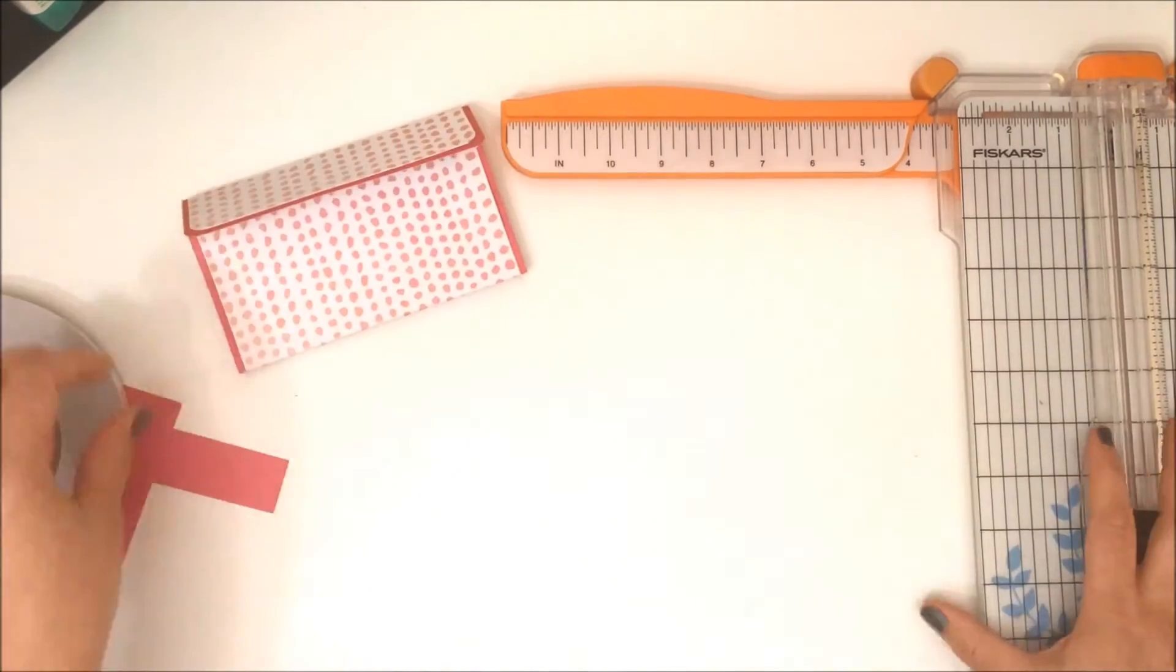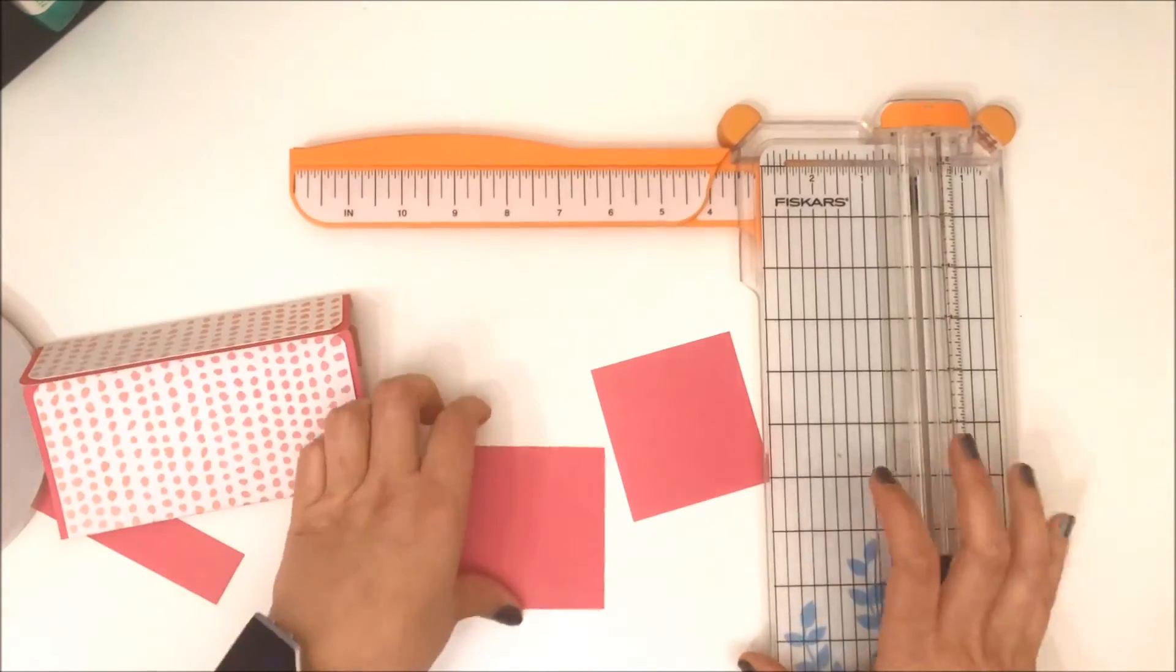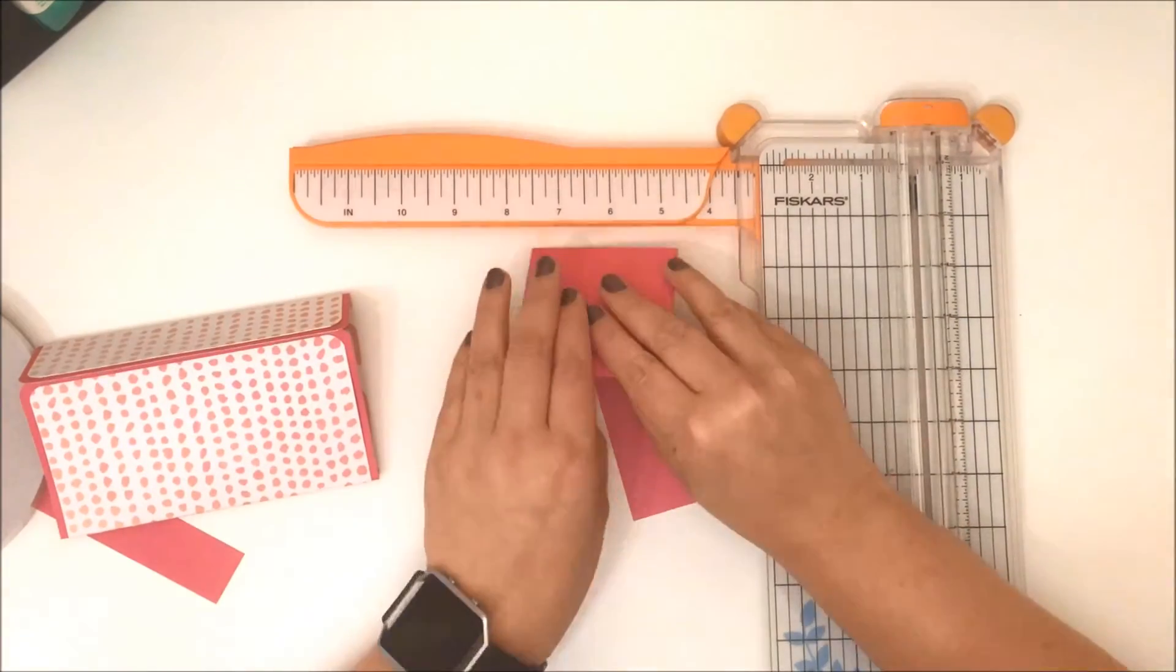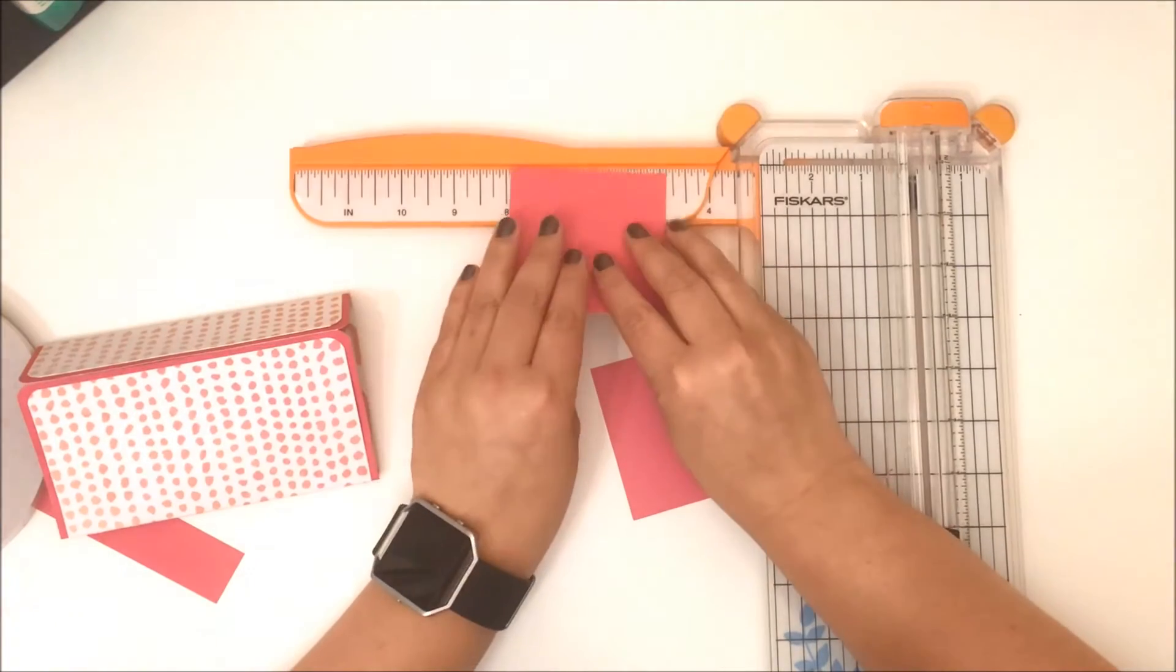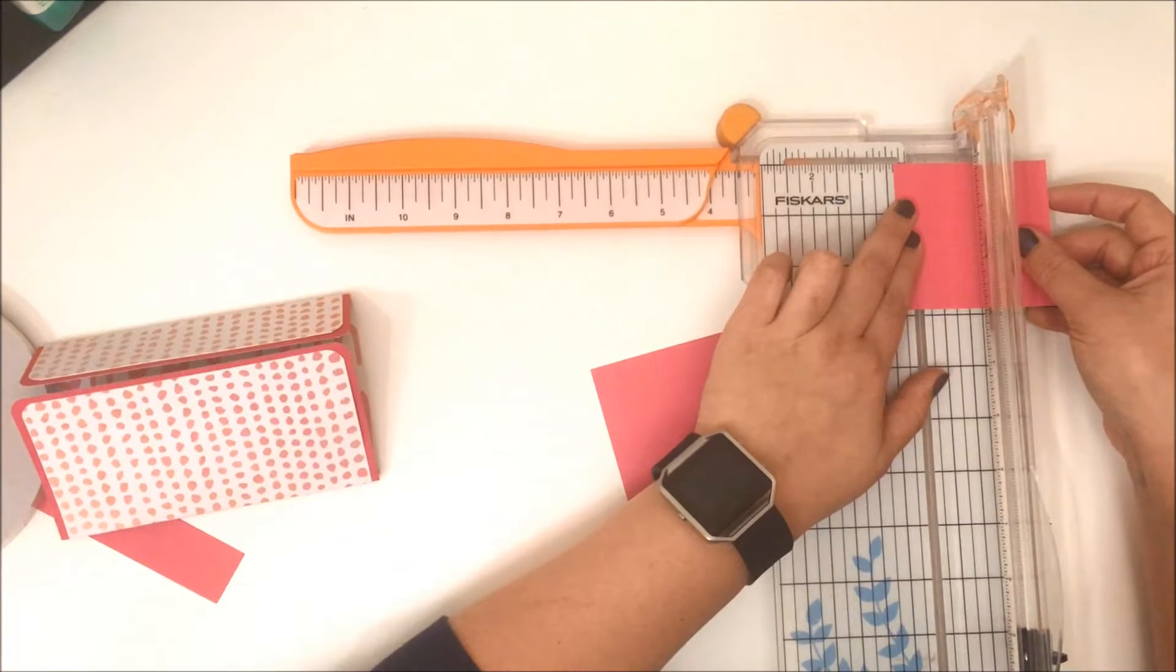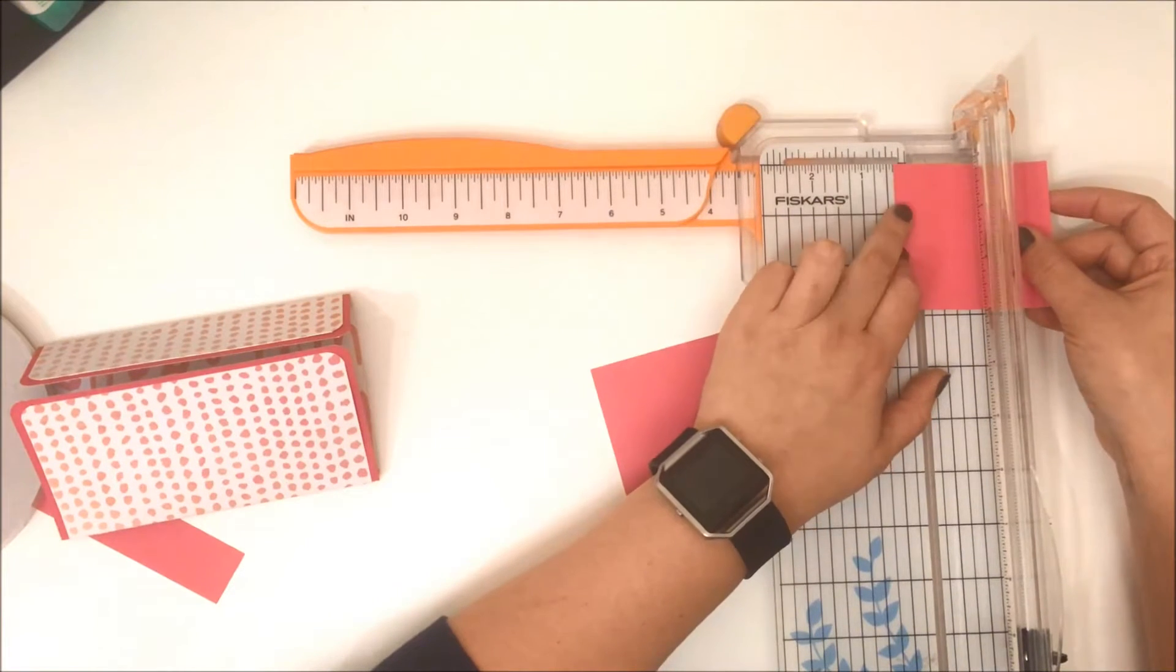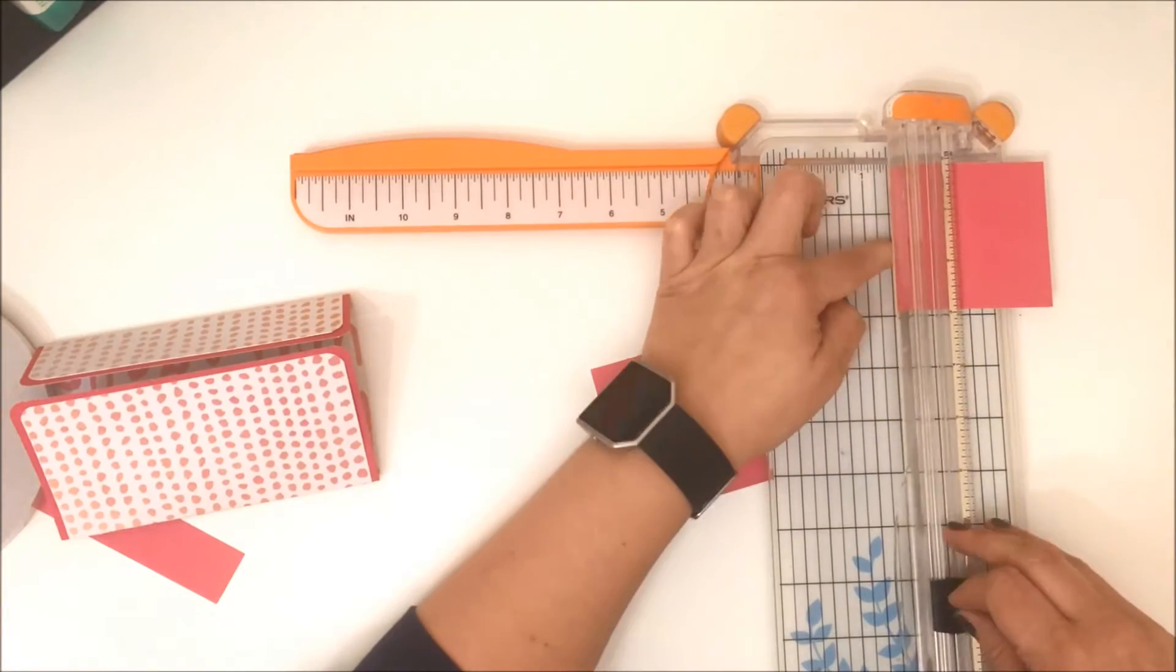Now we're going to move on to the side pieces. I made my side pieces of the wallet concertinaed, so to do that you need two pieces of cardstock. I used the same color as my base color and that measures three inches by two and seven-eighths of an inch.